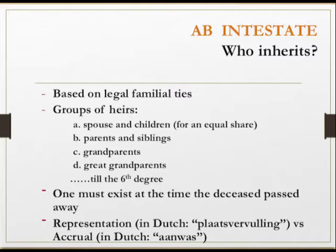If there is a spouse — John was married — or even if John wasn't married but had children, that's the group. We found persons; we need to ask them: are you accepting the estate? They need to know what they're accepting, yes or no. The spouse and children will inherit the estate for an equal share. That's what the law says.